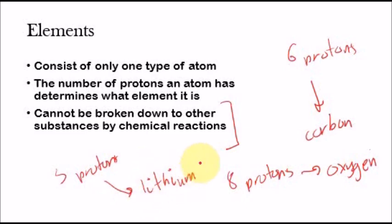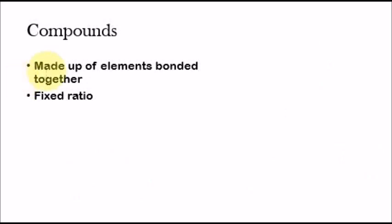So, that's the most important thing I want you to take from this. It's just that the number of protons in an atom determines what element it is. And that elements are the building blocks to what we call compounds. Now, compounds are made up of elements which are bonded together. And in compounds, the elements are in a fixed ratio.